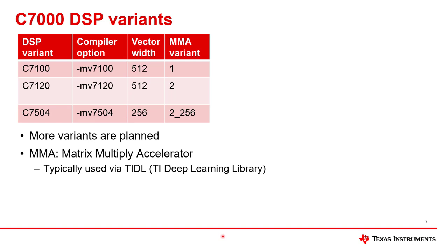This is a table of C7000 DSP variants. The first column is the name of the variant; the second column is the compiler option you use when building for that particular variant; the third column is the vector width, which varies from 512 to 256 bits today. The last column is the MMA variant — there are three different ones. This is not all the variants; more are planned.